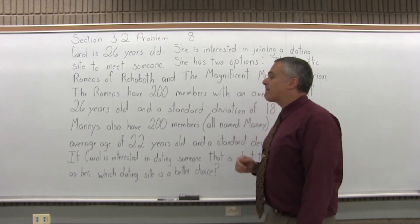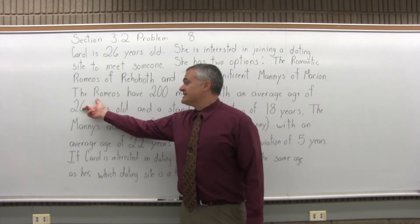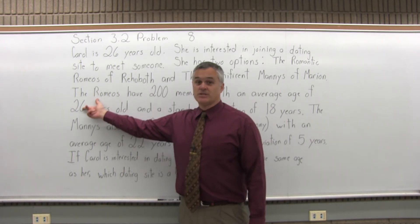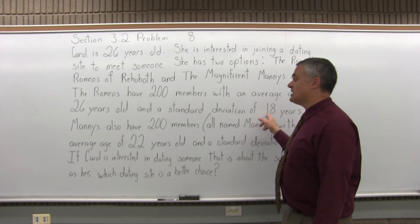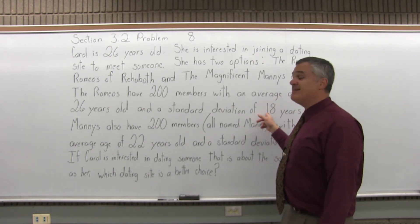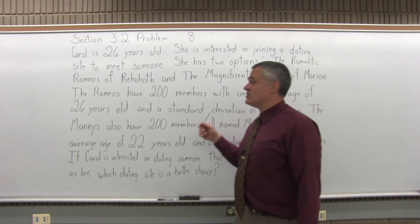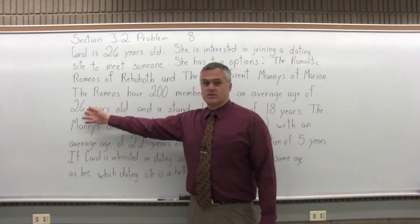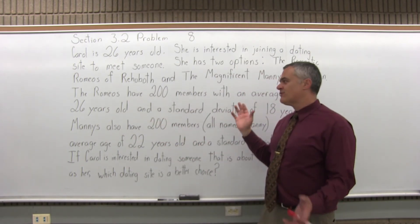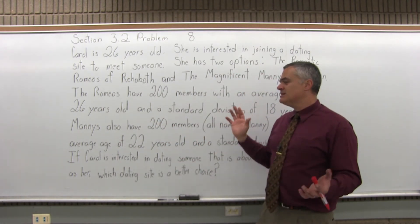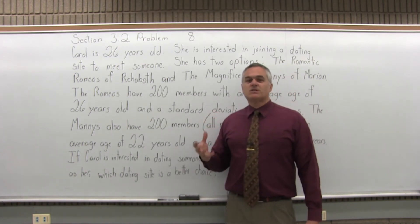If you notice, the Romeos' average age is exactly the same as Carol — 26 years old. But they have a very big standard deviation in the age of their members: 18 years. So you might have no one who's actually 26 years old. You might have some members that are only 5 or 6 years old, some that are in their 70s, 30s, 50s, teens — very spread out. Big standard deviation means big spread in the data.